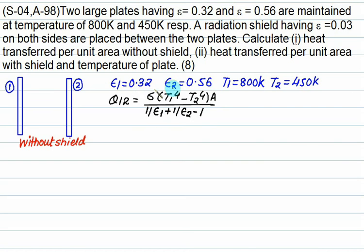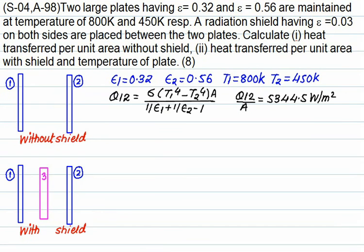Substitute epsilon 1 is 0.32, epsilon 2 is 0.56, T1 is 800 and T2 is 450. So we can find out Q12 by A. This is without shield. The answer is 5344.5 watts per meter square.